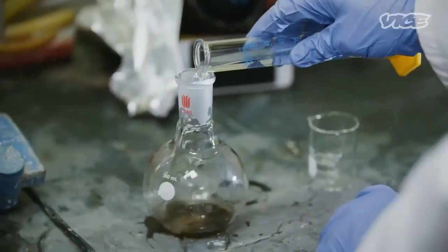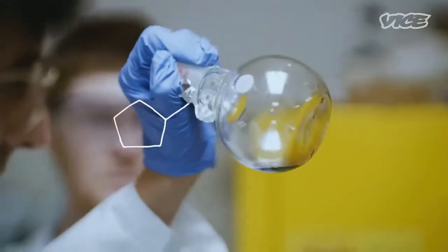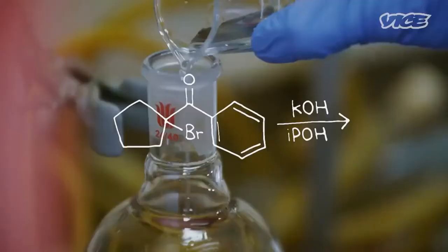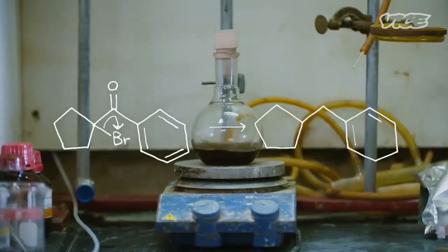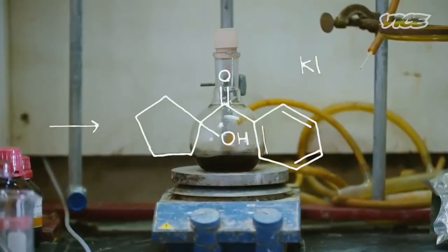The next step is a nucleophilic substitution reaction with hydroxide. The hydroxide is going to be the source of our alcohol. The bromocyclopentyl phenyl ketone is dissolved in isopropanol with a 2 molar excess of aqueous potassium hydroxide. In an SN1 reaction, the bromine acts as a leaving group, and the tertiary carbocation is attacked by nucleophilic hydroxide ions, yielding the hydroxycyclopentyl phenyl ketone. This is the alcohol product.